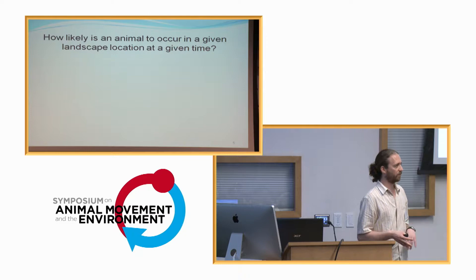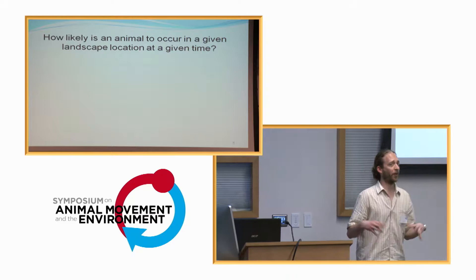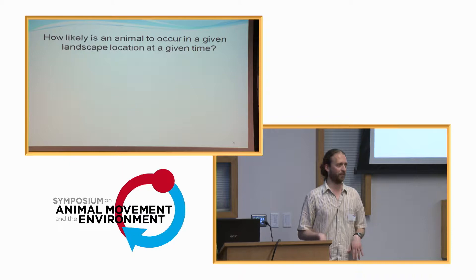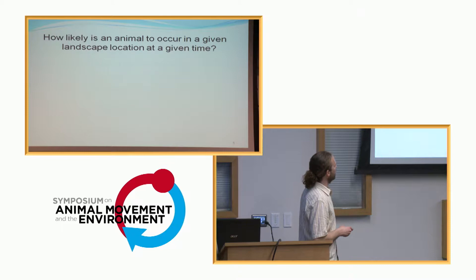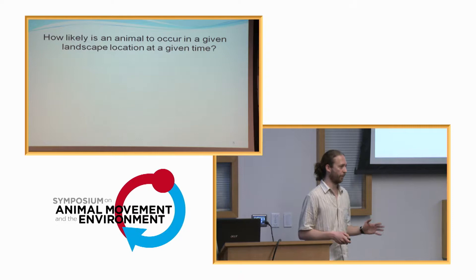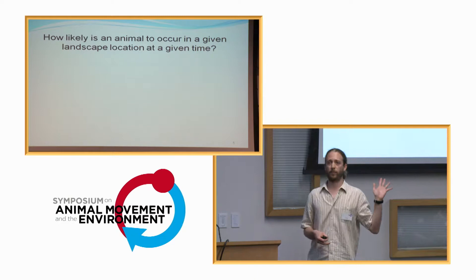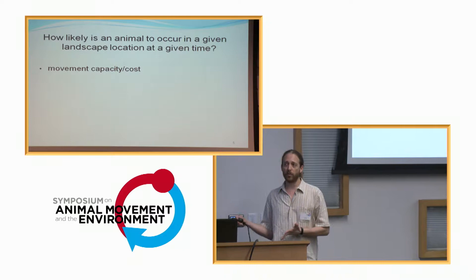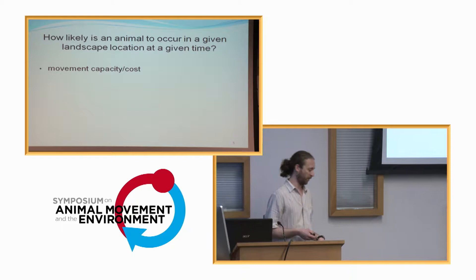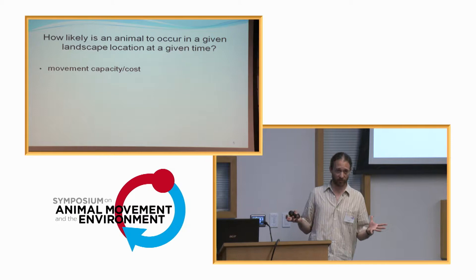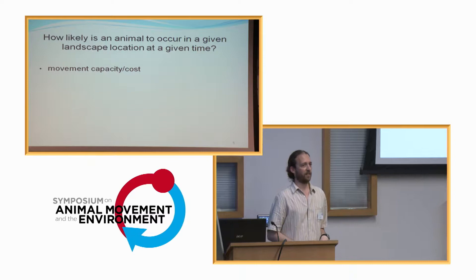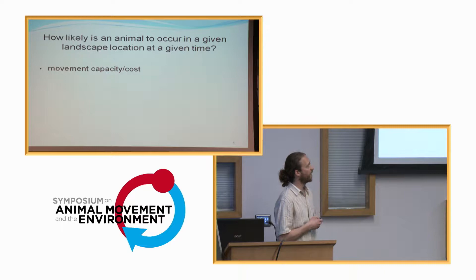I'm going to talk about the assumptions behind this model and how I constructed the algorithm. The first question I'm asking is: how likely is an animal to appear in a given landscape location at a given time? The components that go into this include movement capacity or cost — the animal's speed and physical interaction with the landscape, permeability, and similar factors. This has nothing to do with preference or decision-making; it's a physiological or physical process.